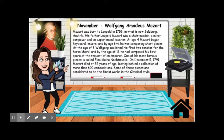At age four, Mozart began keyboard lessons, and by age five he was composing short pieces. At the age of eight, Wolfgang published his first two sonatas for the harpsichord, and by the age of 13, he had composed his first opera at the request of an emperor. One of his most famous pieces is called Eine Kleine Nachtmusik, which is German for 'a little night music.' On December 5th, 1791, Mozart died at 35 years of age, leaving behind a collection of more than 600 compositions. Some of these pieces are considered to be the finest works in the classical style.